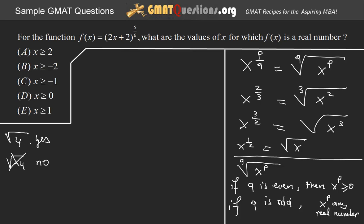I hope I have made myself clear here. Now let's do the question. f(x) is equal to (2x+2) to the power of 5/6. This is going to give us f(x) is equal to the 6th root of (2x+2) to the power of 5.